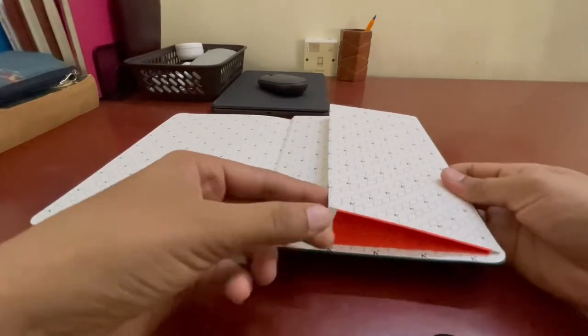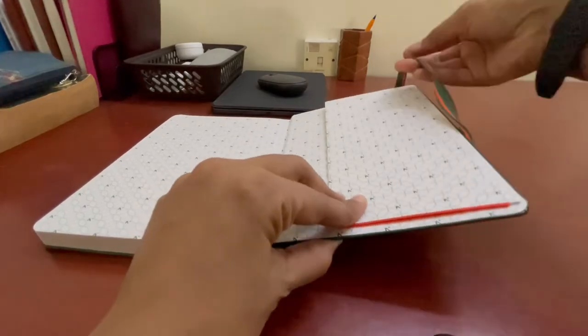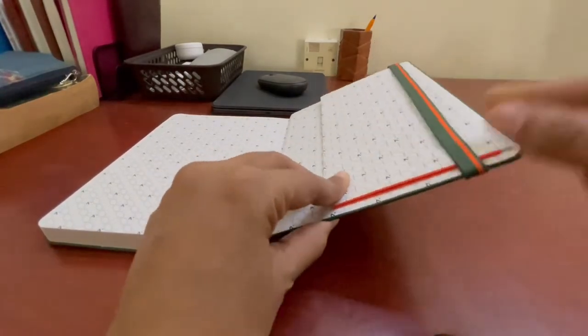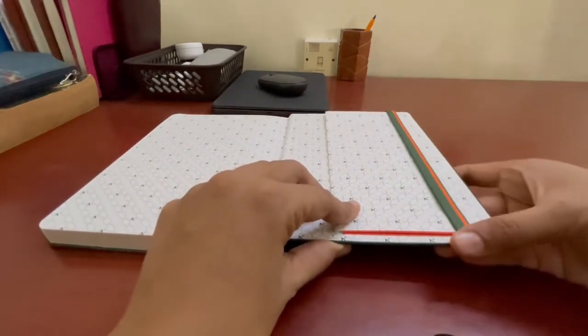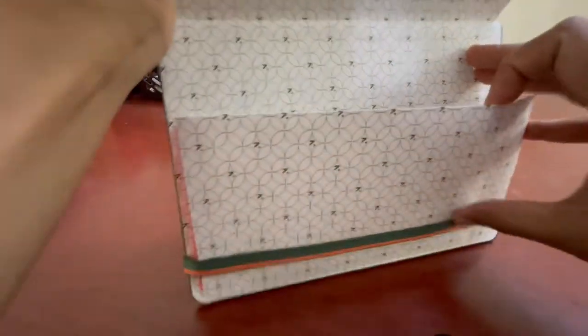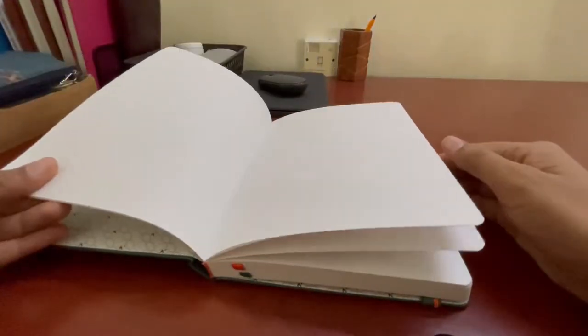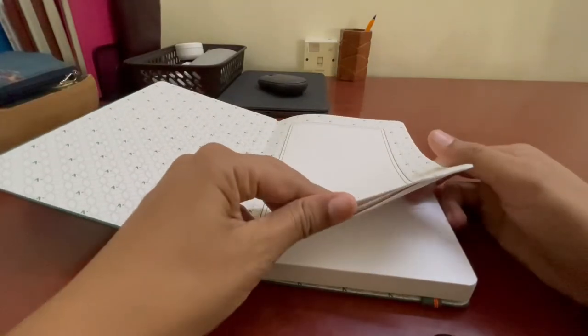There's a small pouch in the back of the book, which I will most probably be pulling off because if you do use dot grid journals or if you do bullet journal yourself, then you might realize that the pouch in the back kind of hinders the way you can draw lines. So it's best removed. Also, I don't really use the pouch that much.